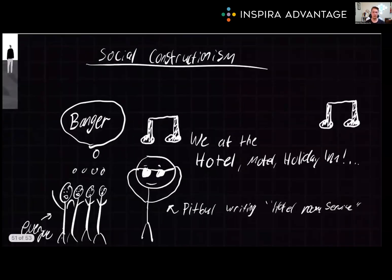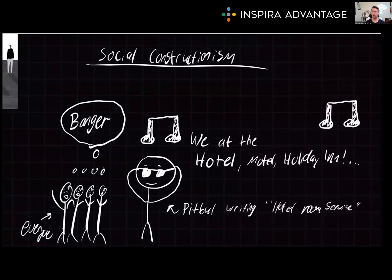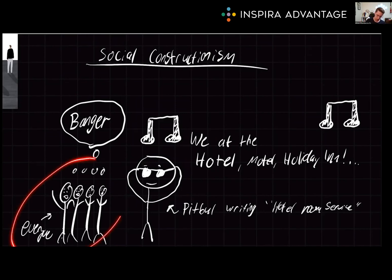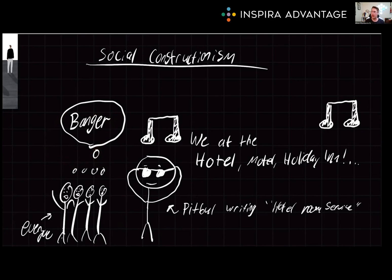Next, we have social constructionism. This explores the way in which individuals and groups make decisions to agree upon a social reality. The value they place on certain social constructs, such as gender roles, can be challenged and changed through social constructionism. For example, consider Pitbull writing the song "Hotel Room Service" — everyone agreeing that song was a banger is an example of us creating the social construct of Pitbull's Hotel Room Service as the song of a generation.